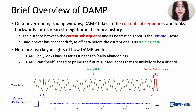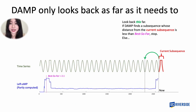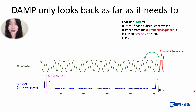Here are two key insights of how DAMP works. First, DAMP uses the idea of early abandoning to search for the nearest neighbor of the current subsequence. Critically, DAMP rarely needs to search back to the beginning of the time series — it only searches as far as it needs to. In this running example, DAMP looks back a certain distance. If it finds a subsequence whose distance from the current one is less than the best discord score so far, it means there is a similar enough subsequence in history, so the current subsequence cannot be a discord and the search stops.